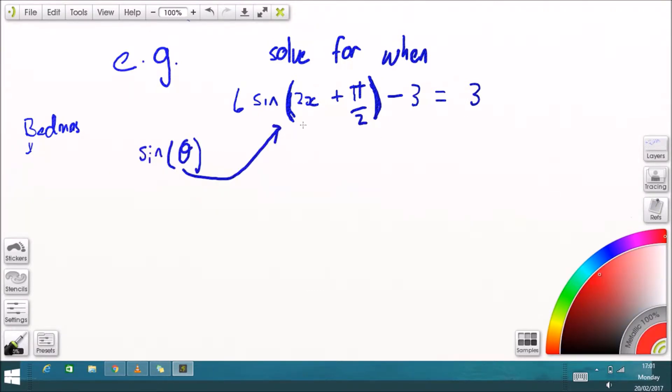So sine of an angle, well in this case we've got 6 times sine of 2x plus pi over 2. Well, the bit inside the brackets that hold 2x plus pi over 2, that's your theta, that's your angle. So we have to undo everything outside the brackets in order, then worry about the brackets.